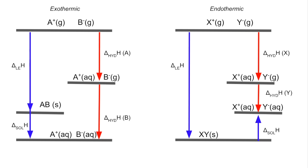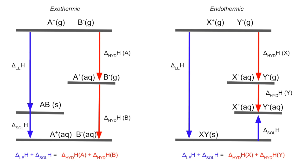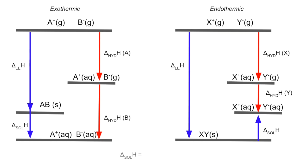We use Hess's law for the calculations. Looking at either cycle, there are two routes from gaseous ions to aqueous ions: the lattice enthalpy plus the enthalpy change of solution on one side, and the sum of the two hydration enthalpies on the other. This applies to both the exothermic and endothermic cycles. The maths is the same regardless: enthalpy change of solution equals the sum of the hydration enthalpies minus the lattice enthalpy.